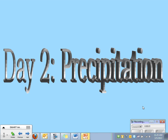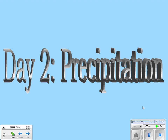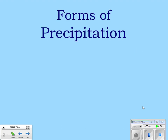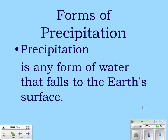These are the water in the atmosphere notes. Water in the atmosphere is also known as precipitation. Precipitation is any form of water that falls to the Earth's surface, no matter what form it's in.